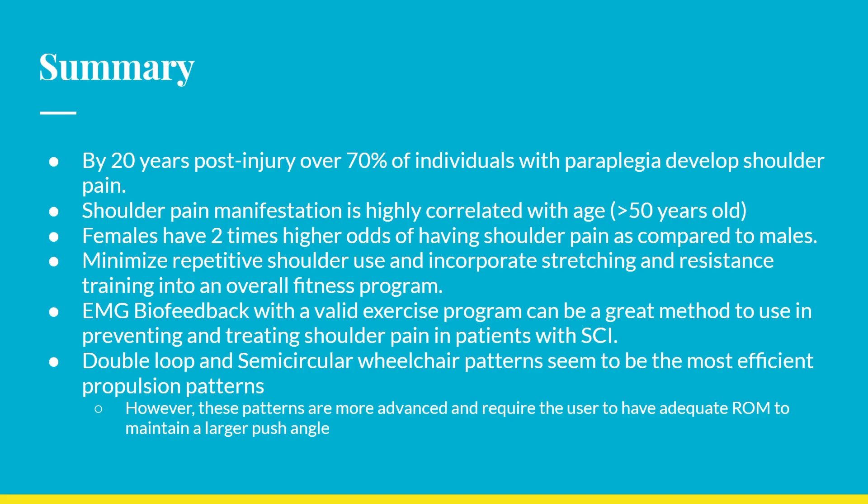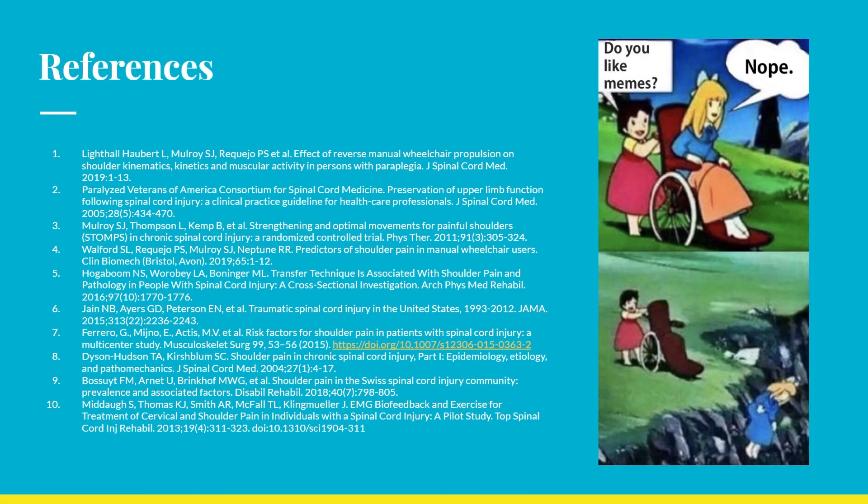In summary: by 20 years post-injury, over 70% of individuals with paraplegia will develop shoulder pain. Shoulder pain manifestation is highly correlated with age, and females have two times higher odds compared to males. A fitness program should include minimizing repetitive shoulder use and incorporating stretching and resistance training. EMG biofeedback combined with a valid exercise program can be a great method for preventing and treating shoulder pain in SCI patients. Finally, the double loop and semicircular wheelchair propulsion patterns seem most efficient, though they are more advanced and require adequate shoulder range of motion for a larger push angle.